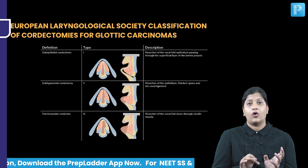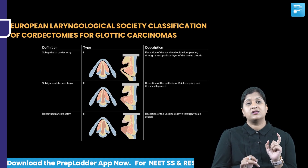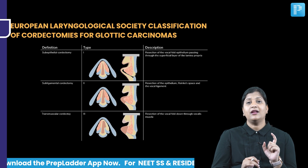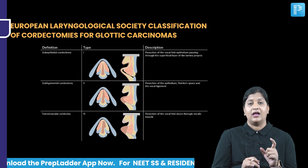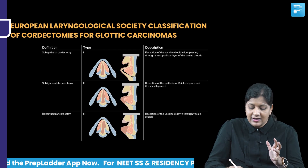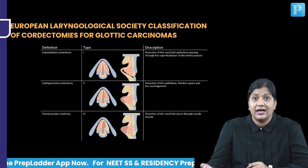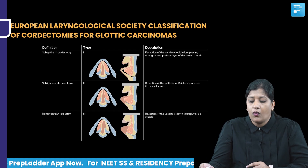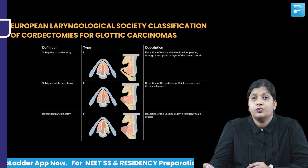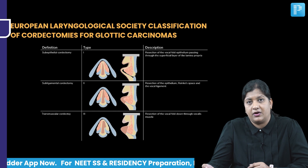What are the types of chordectomies? The first one is called sub-epithelial chordectomy. It is defined as resection of the vocal fold epithelium passing through the superficial layer of the lamina propria.